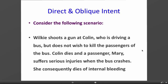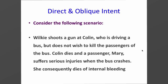This particular scenario reads as follows: Wilkie shoots a gun at Colin, who is driving a bus, but does not wish to kill the passengers. Colin dies and a passenger, Mary, suffers serious injuries when the bus crashes. She consequently dies of internal bleeding. Consider whether it's direct intention, oblique intention, or a mixture of both. Pause the video here and consider before pressing play to continue.